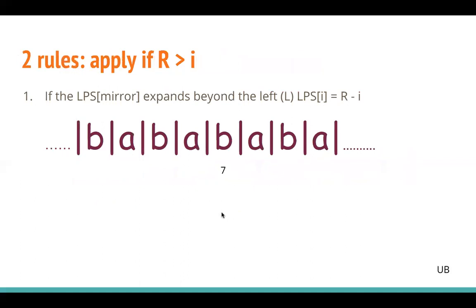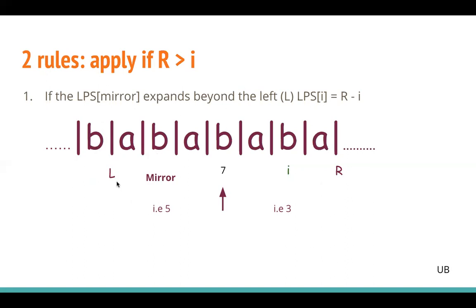There are two rules to ensure the symmetric property can be applied. These rules can only be applied when the position i is less than r, the right boundary of the current center. Assuming our string has center at B with a palindrome of length 7 — so the left and right boundaries are 7 positions away — we need to calculate the LPS length at position i and its mirror. If the mirror has a palindrome length of 5, and that length extends beyond the left boundary, we update the length of i to equal r minus i, which in this case is 3.